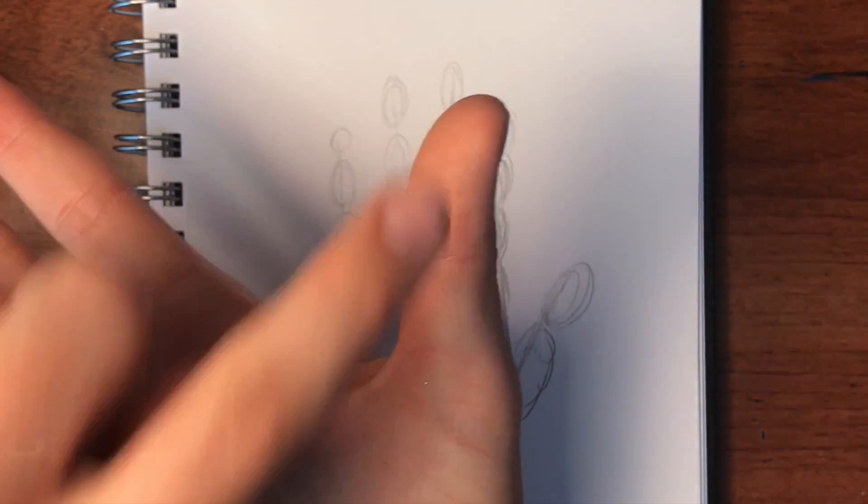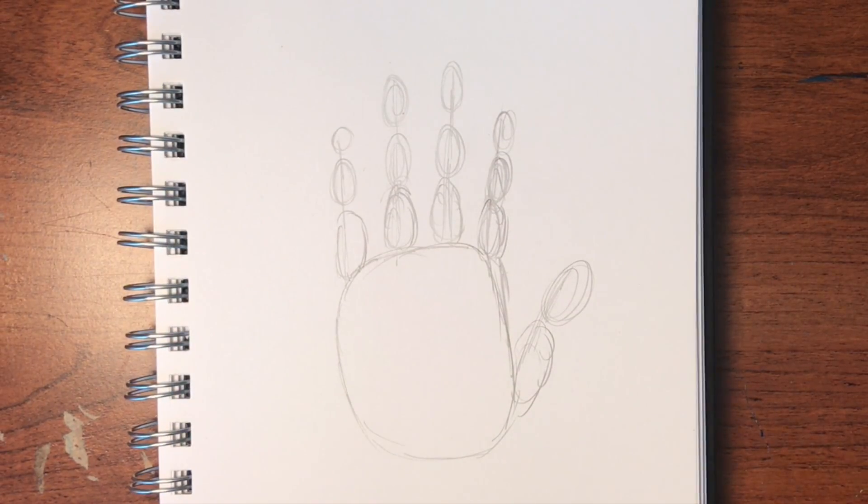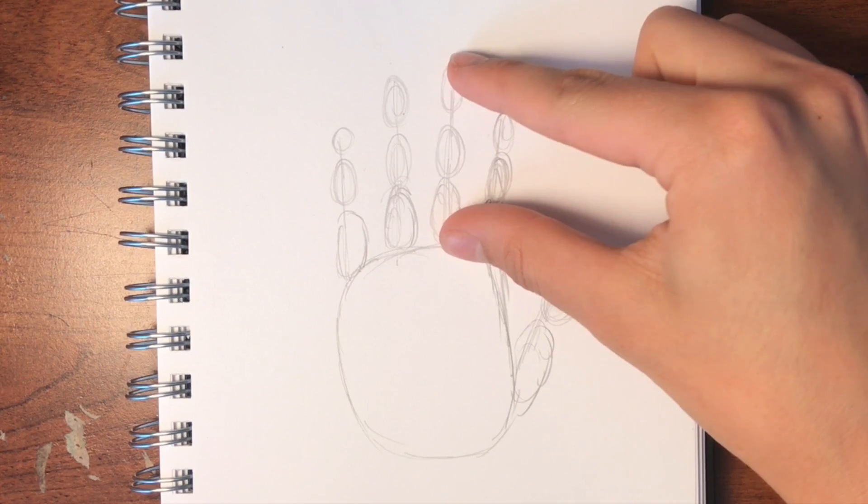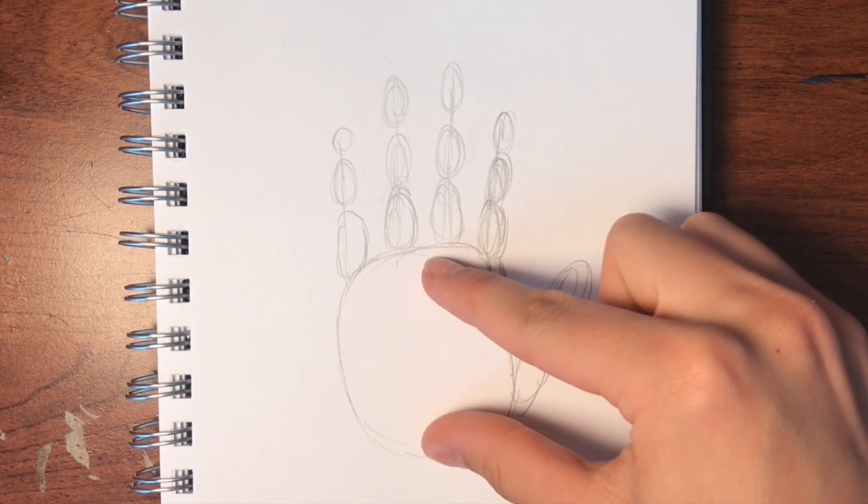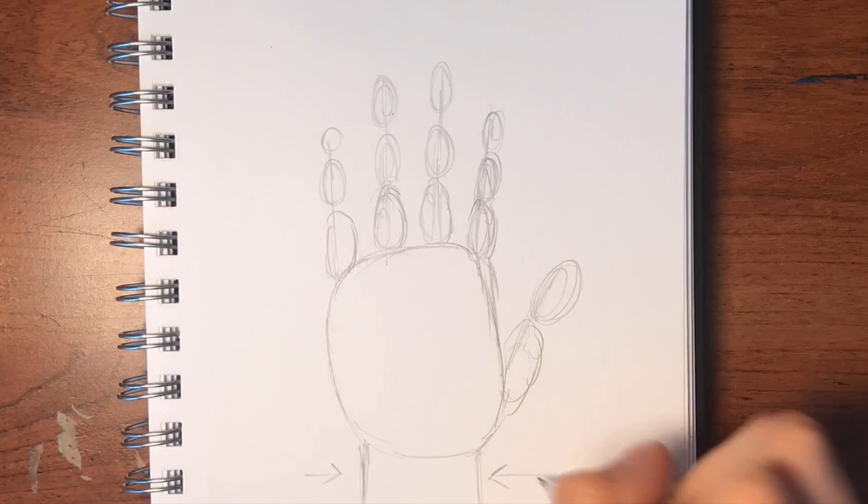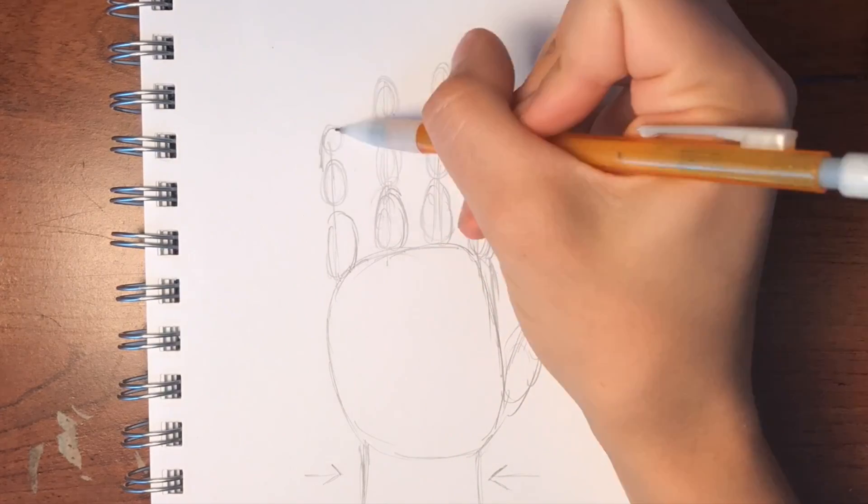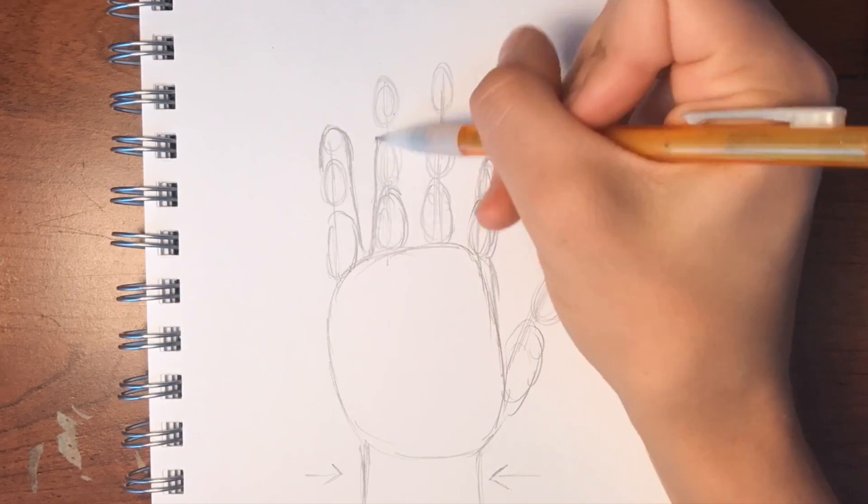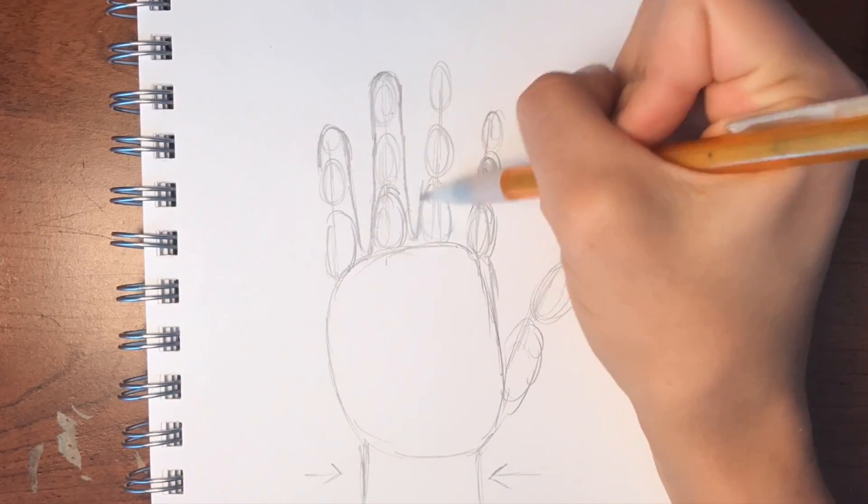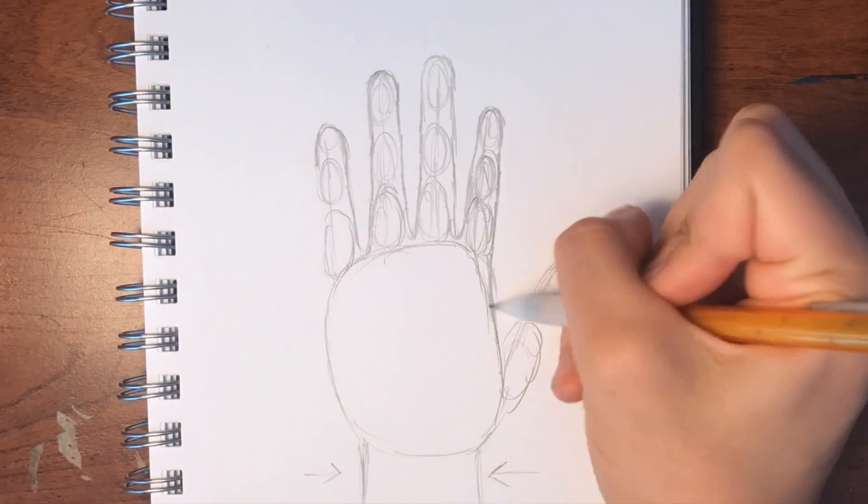If you can't figure out how long to make the fingers just by looking at it, something that helps is to measure the middle finger. It is usually as long as the palm of the hand. And then of course you put the wrist a little bit in from the sides of the hand, and once you have that basic structure, then you can go ahead and outline your hand.